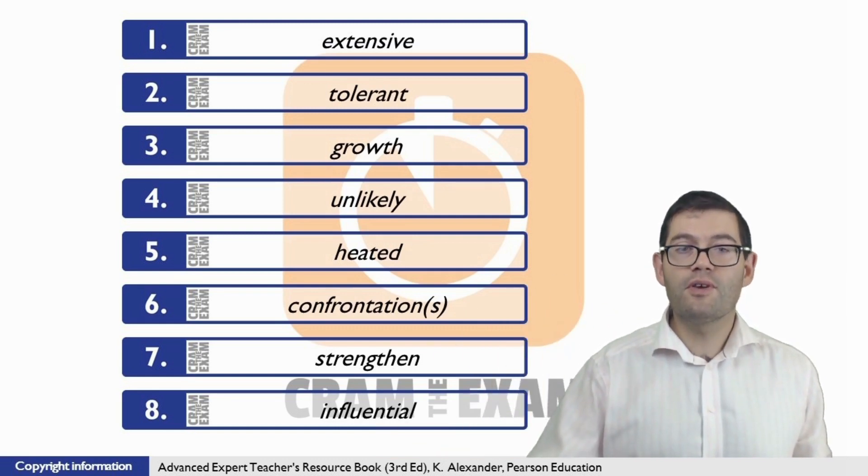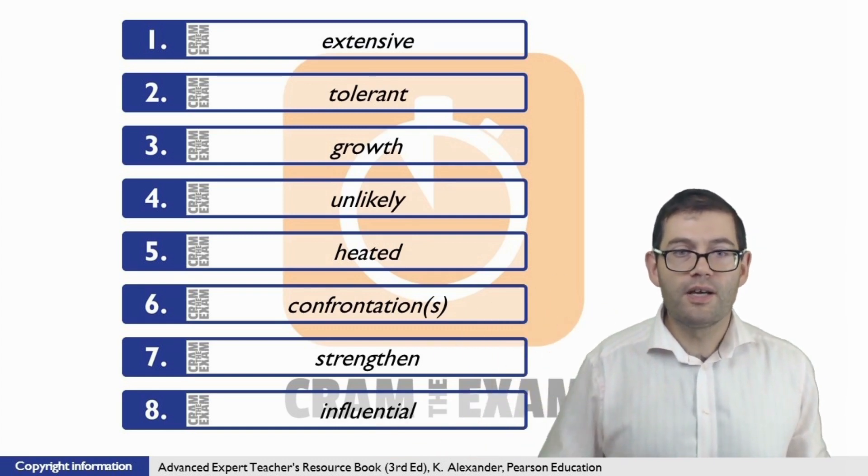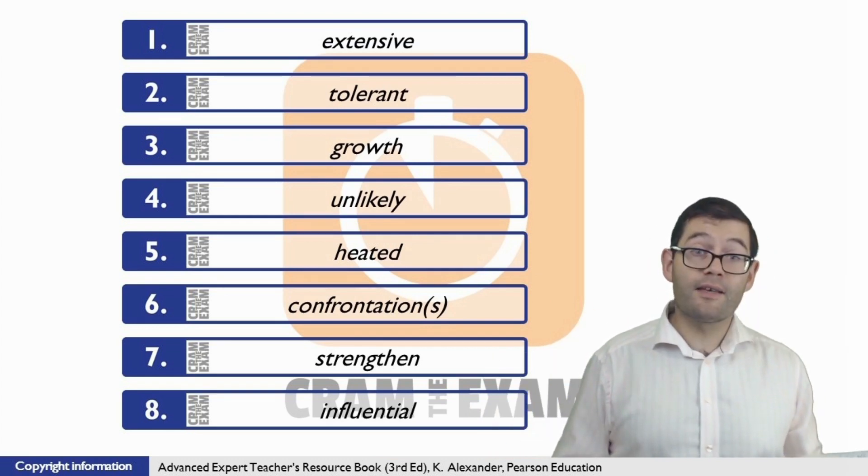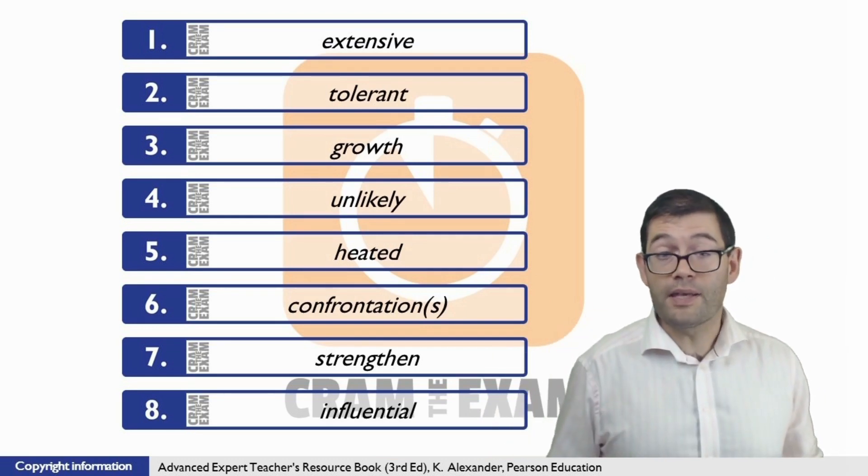Question number eight. 'Other people.' The gap here is before 'people.' People is a noun. What modifies nouns? Adjectives do. So what kind of people? Other what kind of people? Of course, it is other influential people.